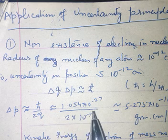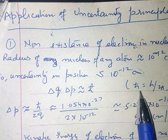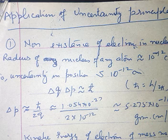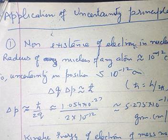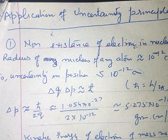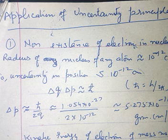delta q into delta p is approximately equal to h-cross, where h-cross is h upon 2 pi. Here delta q is the uncertainty in position, delta p is the uncertainty in momentum, and h-cross is h upon 2 pi. This equation gives delta p equal to h-cross upon delta q.